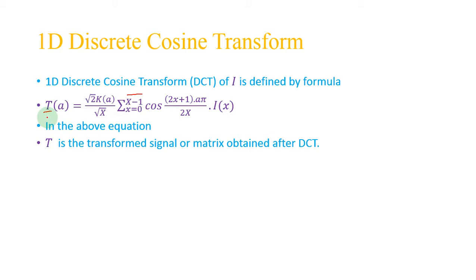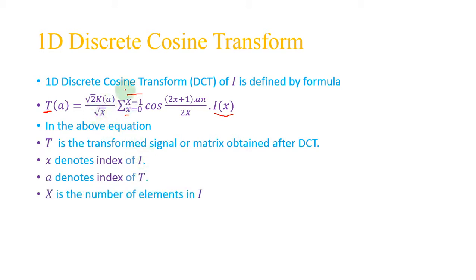Let's see what these variables are. T is the transformed signal — in the 1D case it will be a transformed signal, in the 2D case it will be a transformed matrix or transformed image. I is the input signal, and x denotes the index of I, so x goes from 0 to X-1, where capital X is the number of elements in I, or the size of the input signal.